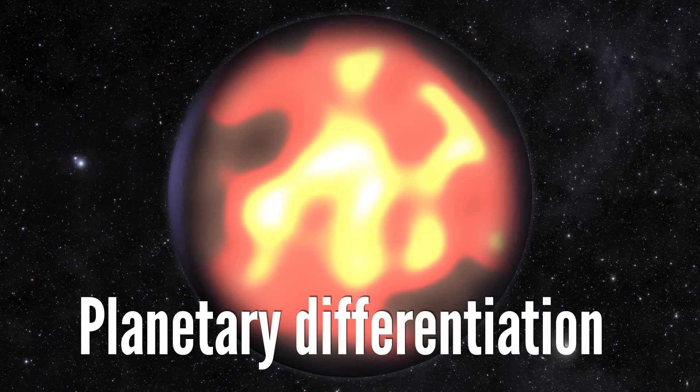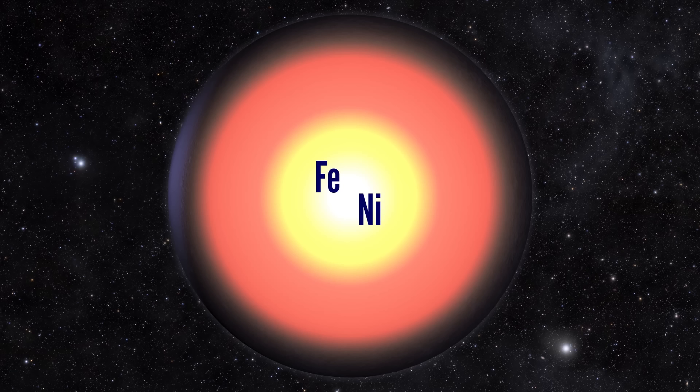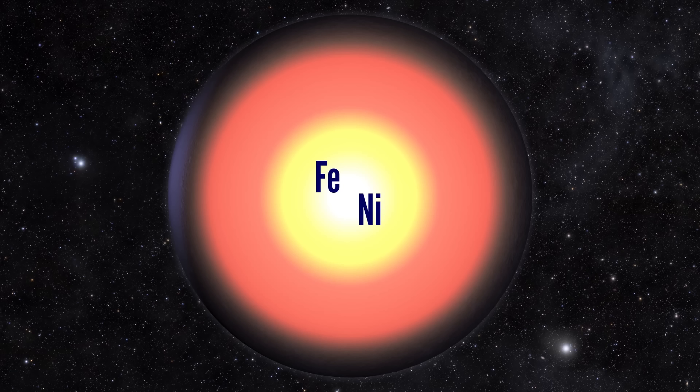And this is where things started to get organized. Just like that tower of density, the heaviest materials like iron and nickel work their way to the core. The lighter materials like aluminum and silicon stayed near the surface.